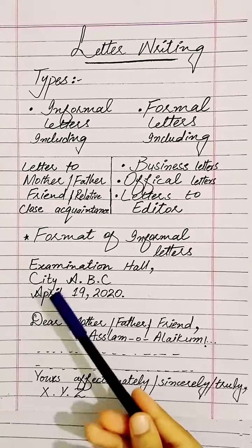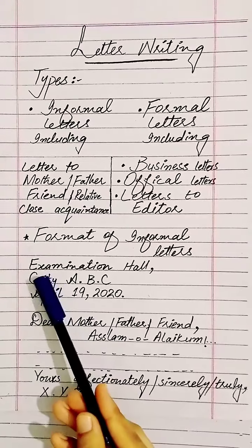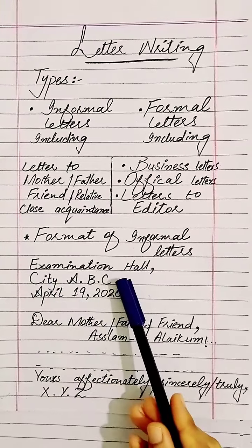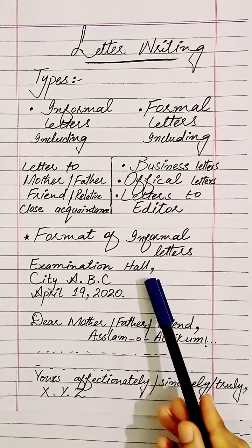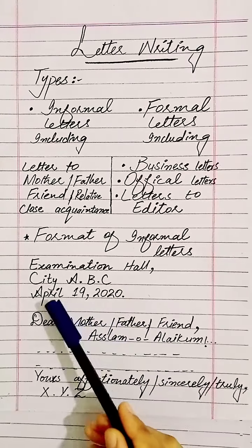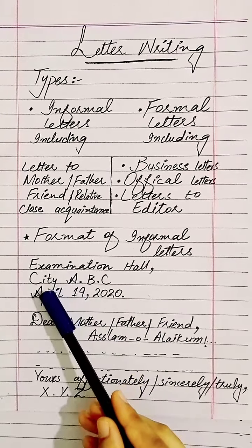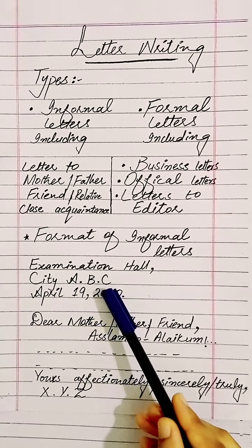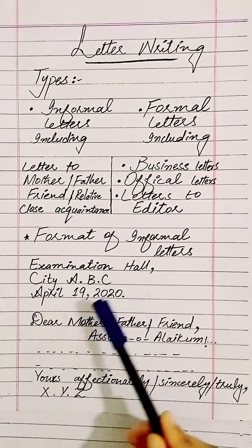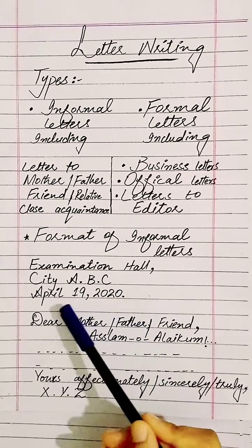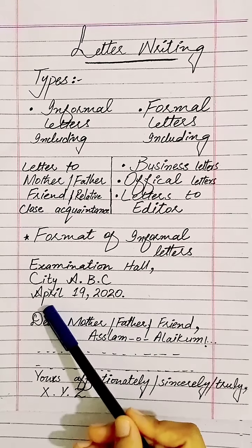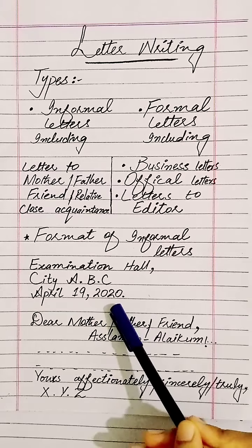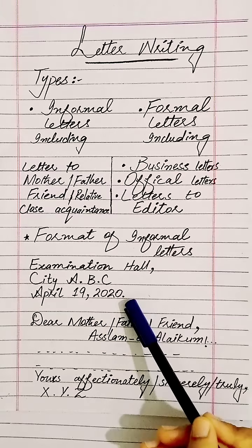Now, students, come to the head of the letter. First of all, we will write 'Examination Hall' — the E of Examination and H of Hall written in capitalization — and then put a comma. In the second line, in the same direction, we will write the city as 'a.b.c.' and after writing c, we don't put a comma or full stop. In the third line, we will write the month, date, comma, and then the year. After writing the year, we put a full stop.